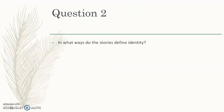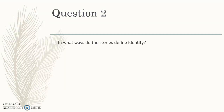In question two, one of the questions asked is: in what ways do the stories define identity? When they refer to stories, they're looking at the creation stories we read for this week. I'm going to focus on the Navajo people, but in your answer I would be looking for a reference to both the Navajo creation story and the Iroquois creation story, because they are very different stories with a different take on how they define identity.